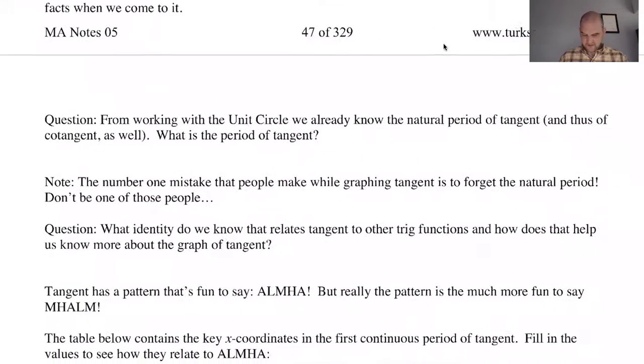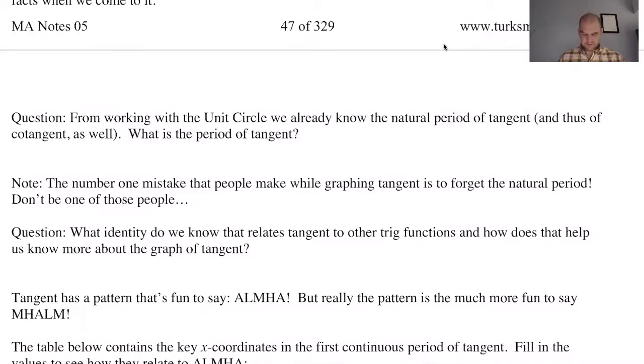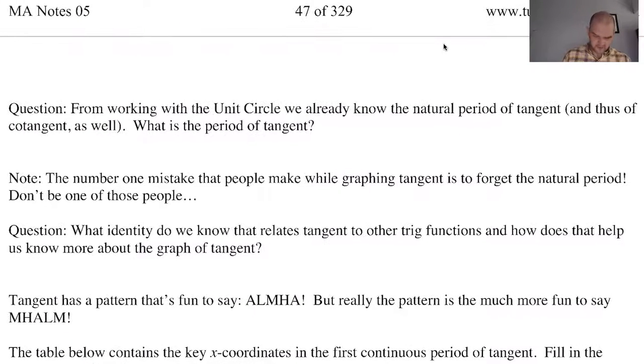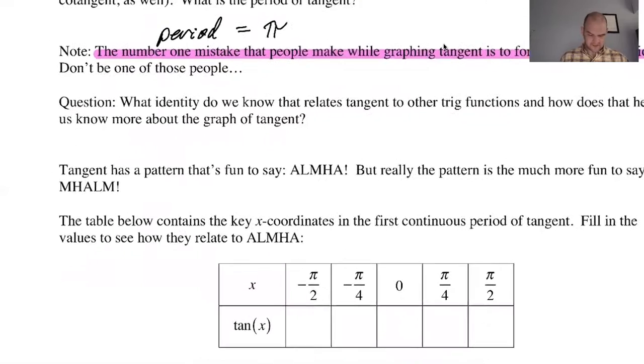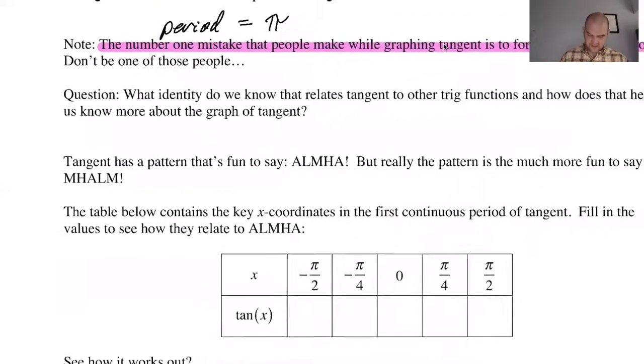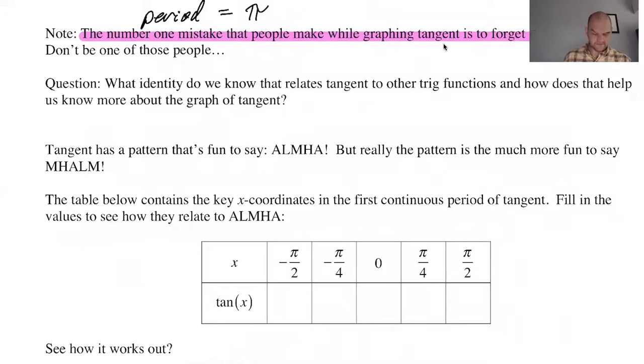So I'm working with a unit circle. We already know the natural period of tangent. We worked that out in notes maybe 4 or 3 somewhere. Tangent and cotangent have to have the same period because they're reciprocals. The period of tangent is pi. This is without a doubt the number one mistake that people make when they are graphing tangent. The reason for that is you get so used to using two pi because of sine, cosine, secant, cosecant which are more common graphs.